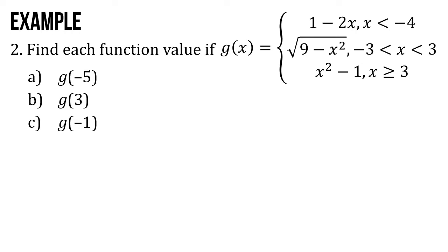We can also evaluate piecewise functions. For example, number 2: find each function value if g of x equals 1 minus 2x when x is less than negative 4; square root of 9 minus x squared if x is between negative 3 and 3; and x squared minus 1 if x is greater than or equal to 3. We have three values of x given. Since it is a piecewise function, consider the value of x to be substituted based on the conditions given beside each function.